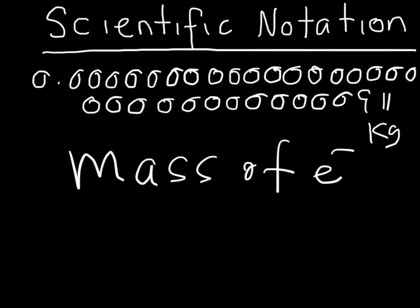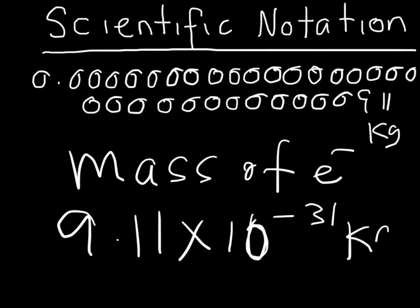So that's the mass of an electron. And from my point of view, that's really not useful. Those are all zeros. So it's one zero before the decimal place and then 30 afterwards, 9, 1, 1. And in scientific notation, what that is, is 9.11 times 10 to the negative 31 kilograms. That's the mass of an electron.